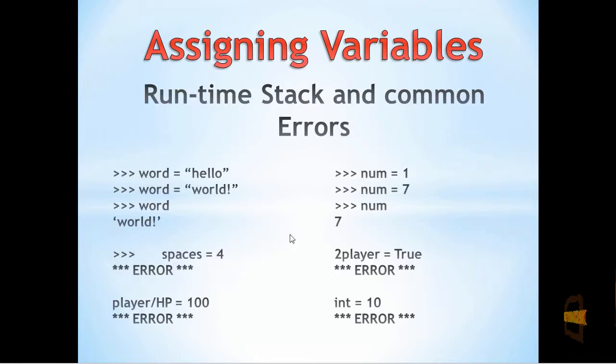Here at the top, we first have examples of the runtime stack. Simply, we put the variable word equal to the string 'hello' first, and then we reassign it to the string 'world!', such that when we access what's inside the variable word, we get the most recently assigned value being the string 'world!'.